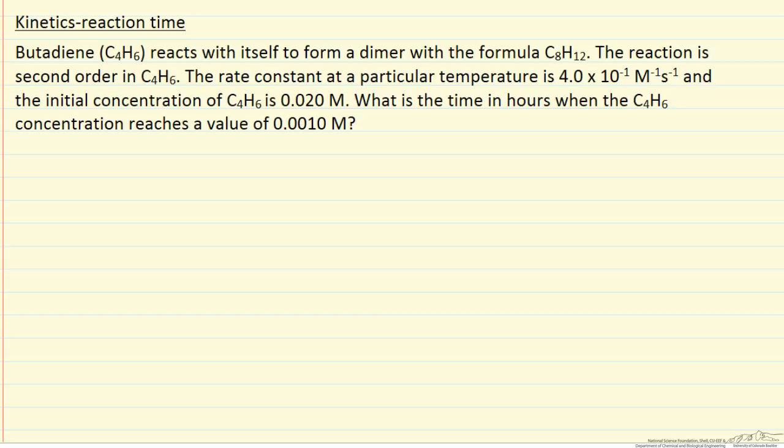Here we have butadiene that's reacting with itself to make a dimer. This is a second order reaction in the concentration of butadiene. We're given the rate constant and the starting concentration and we want to know how long it takes to reach a final concentration of 0.001 molar.